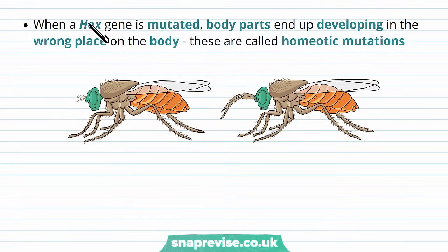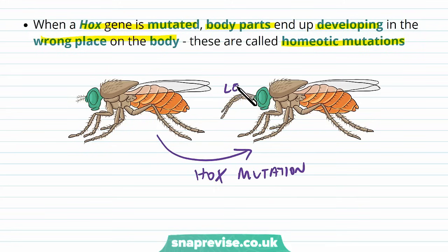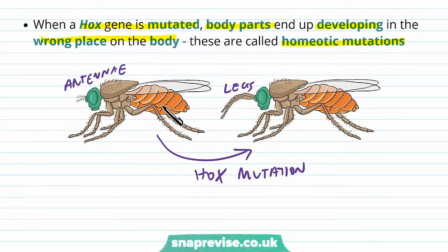Hox genes are clearly very important because when a Hox gene becomes mutated or damaged, body parts end up developing in the wrong place on the body — this is called a homeotic mutation. Through experiments in flies, certain Hox mutations cause legs to develop on the head instead of antennae. So Hox genes are very important in positioning different parts of the body in the right place.